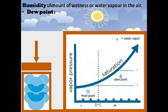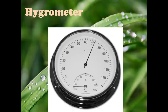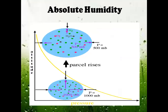Humidity is measured with an instrument called a hygrometer. Moreover, it can be measured in two ways: absolute humidity and relative humidity. Absolute humidity is the actual amount of water vapour present in a given volume of air. It is expressed as grams per cubic meter. Absolute humidity is not affected by change in temperature.